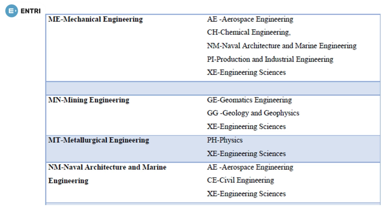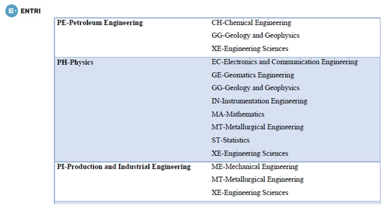If you are from Mining Engineering, your options are Geomatic Engineering, Geology and Geophysics, and Engineering Sciences. For Metallurgical Engineering, you can choose two options: Physics and Engineering Sciences. For Naval Architecture and Marine Engineering, you can choose secondary papers: Aerospace Engineering, Civil Engineering, and Engineering Sciences. For Petroleum Engineering as your primary option, you can have three secondary options: Chemical Engineering, Geology and Geophysics, and Engineering Sciences. For the Physics department, secondary paper options include Electronics and Communication Engineering, Geomatic Engineering, Geology and Geophysics, Instrumentation Engineering, Mathematics, Metallurgical Engineering, Statistics, and Engineering Sciences.